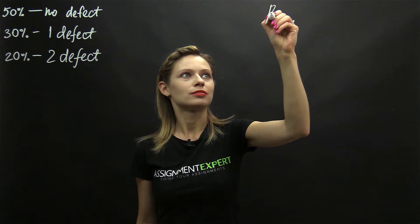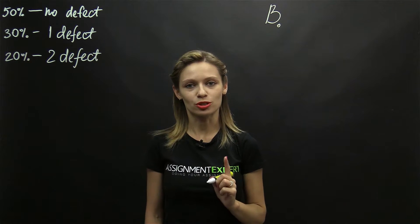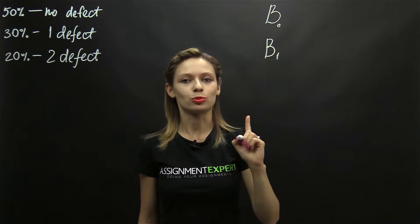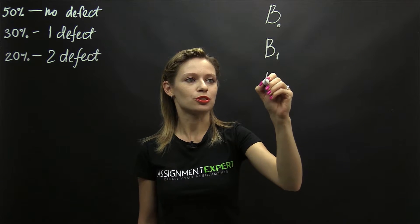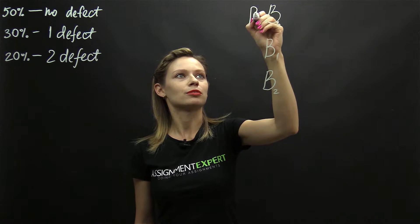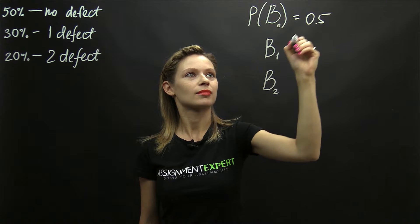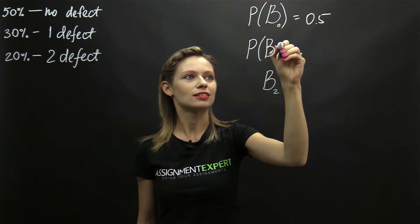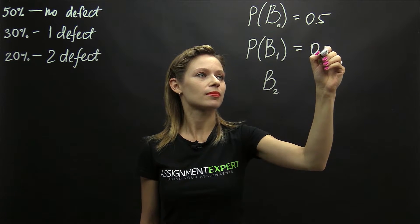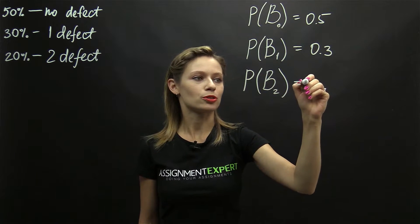Let B0 be the event of selecting the batch with no defective components, B1 the batch with one defective component, and B2 the batch with two defective components. The probability of B0 is 0.5, probability of B1 is 0.3, and probability of B2 is 0.2.